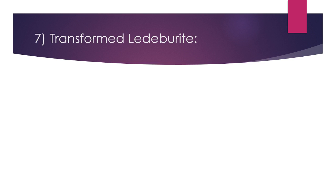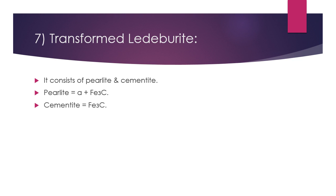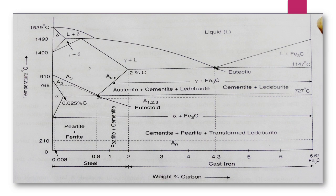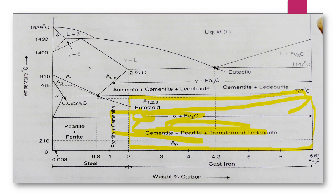The next phase is the transformed ledeburite. It consists of pearlite and cementite. Transformed ledeburite is a mixture of pearlite and cementite, where pearlite is alpha ferrite plus Fe3C (cementite). This is the region of transformed ledeburite — a mixture of cementite and pearlite.